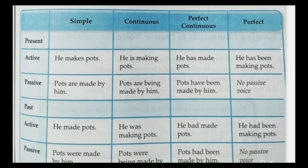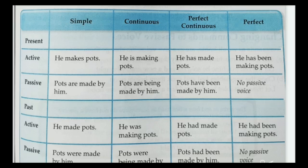For present perfect: 'He has made the pots' — use 'has been' or 'have been': 'The pots have been made by him.' For present perfect continuous: 'He has been making pots' — no change is possible, it remains as is; it cannot be converted to passive voice. So you only need to remember three present tense forms for passive transformation.